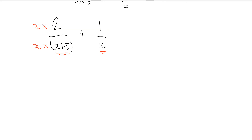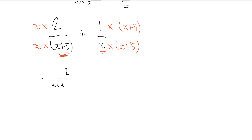We can take this x and times this fraction by x, but then we've got to times the same value on the numerator by x. Because if these x's cancel out, you're back to where you started, which is exactly what we want. And we're taking this fraction's denominator x plus 5 and multiplying the numerator by x plus 5. So now we can say that's the same as 2 over x(x+5), plus 1 times (x+5), which is x+5, divided by x(x+5). And you can see, actually, on this expression that you've got a common denominator.